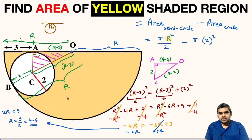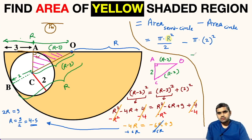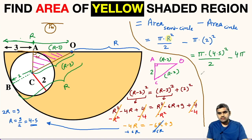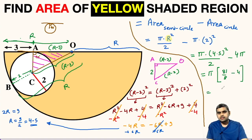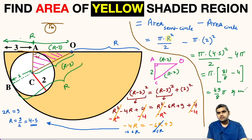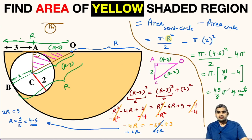Now substituting R equals 4.5 back into the area formula: pi times (4.5) squared divided by 2 minus 4 pi. Taking pi as common, we get pi times [(4.5 squared over 2) minus 4], which is pi times [81/8 minus 4]. This gives pi times (81 minus 32) over 8, equal to 49 over 8 times pi square units. So the area of the yellow shaded region is 49π/8 square units.